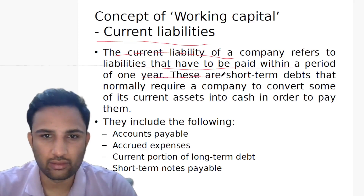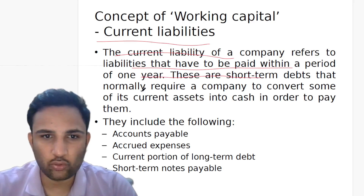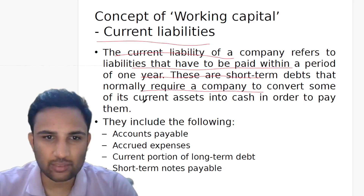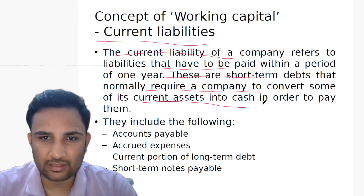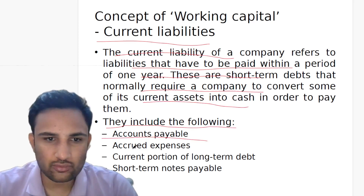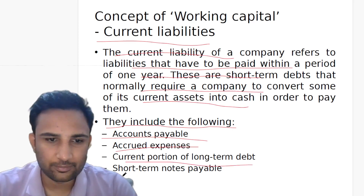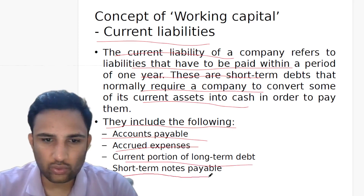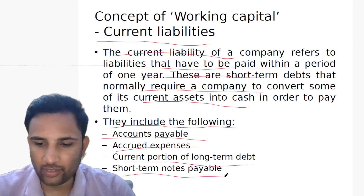Current liabilities refer to liabilities that have to be paid within a period of one year. These are short-term debts that normally require a company to convert some of its current assets into cash in order to pay them. They include: accounts payable, accrued expenses, current portion of long-term debts, and short-term notes payable.